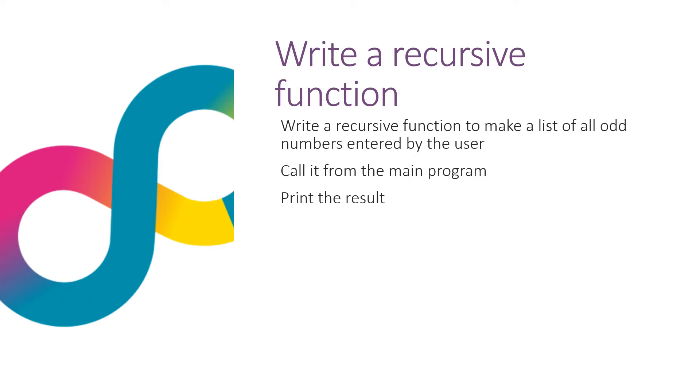So see if you can write a recursive function using everything that you've learned this week. Write a recursive function that makes a list of all the odd numbers entered by the user. So we'll start with an empty list. The user will enter numbers one after the other and if the number is odd it will be added to the list. Think of a base case, for instance if the user enters zero it will stop the function and return the list of odd numbers to the main program and in the main program print out the result. You've definitely got all the skills you need to write this function. I'm going to show it to you on the next screen but see if you can do it now because if you can that shows you've really understood how recursion works.